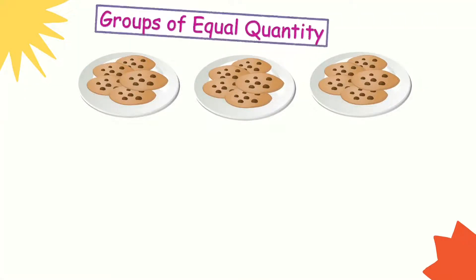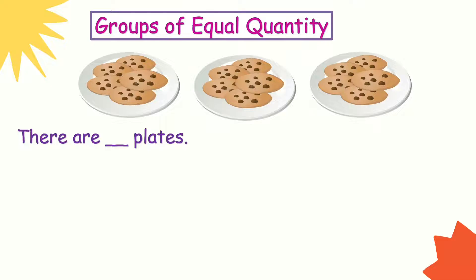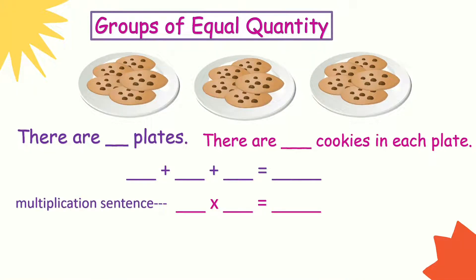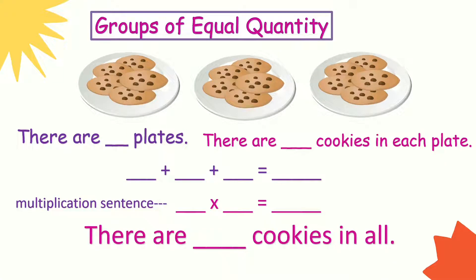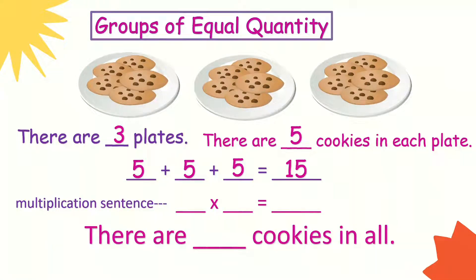We can also use groups of equal quantity. How many plates are there? There are 3 plates. And how many cookies are in each plate? There are 5 cookies in each plate. So the addition sentence is 5 plus 5 plus 5 equals 15. The multiplication sentence is 3 times 5 equals 15 — 3 is the number of plates, 5 is the number of cookies. There are 15 cookies in all.